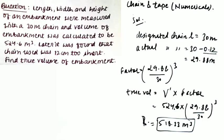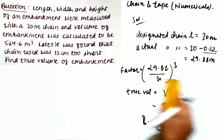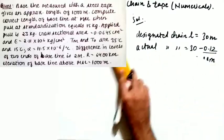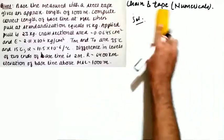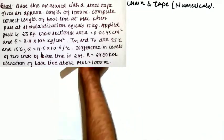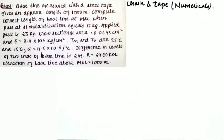So you understand the concept of standardization correction. In every case, remember whether volume, area, or length is being corrected and apply the cube, square, or direct ratio accordingly. Now moving to the last question of chain and tape correction, in which almost all types of corrections are covered.